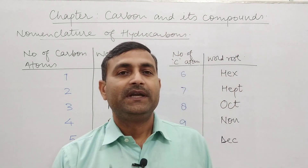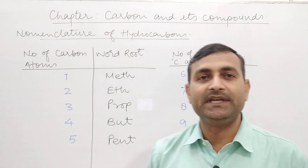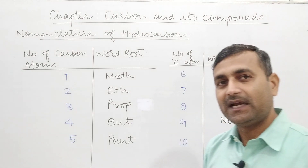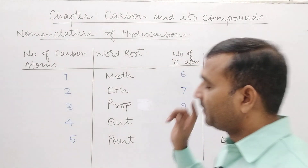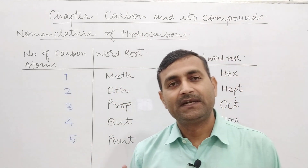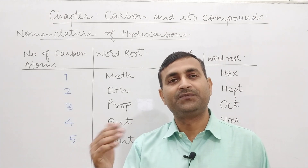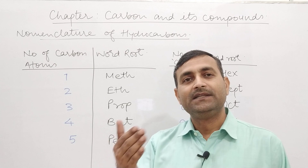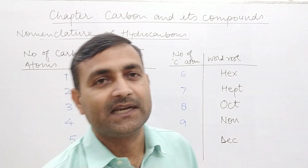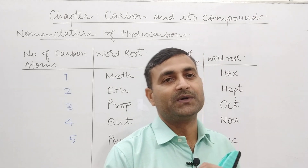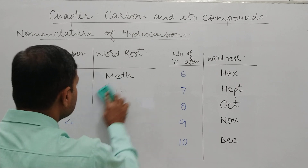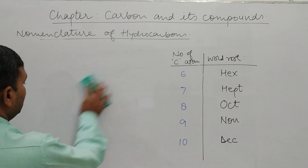कम से कम 10th level पे इन 10 तक के word root clear अगर हैं, तो फिर आप किसी भी question में नहीं फसेंगे। इसके बाद बात आती है suffix की। Suffix का मतलब होता है जो word root के बाद में लगने वाला word है — that is called suffix. Suffix पहचानने में help करता है जो type of hydrocarbon है वो।